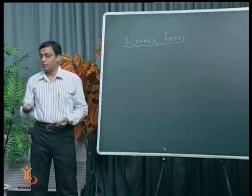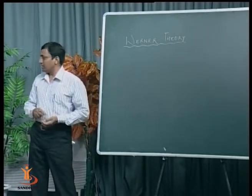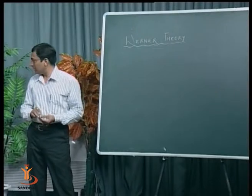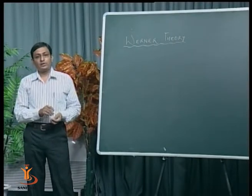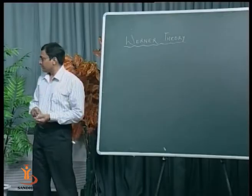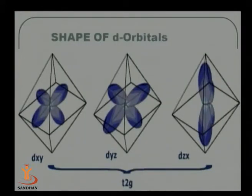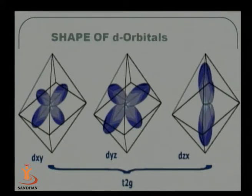Now let us discuss the splitting of d orbitals. The d subshell has five orbitals: d_xy, d_xz, and d_yz — all lying between the axes, forming double dumbbell shapes. These three are called T₂g orbitals. The other two are d_(x²−y²) and d_(z²), whose lobes lie on the axes; these are called e_g orbitals.